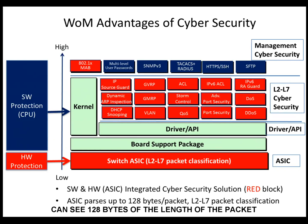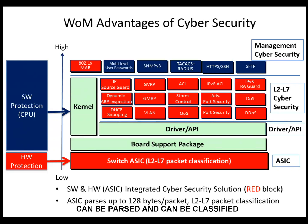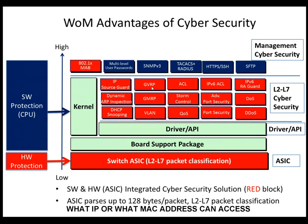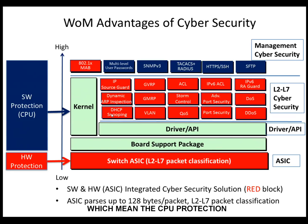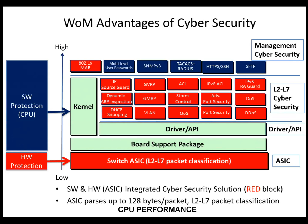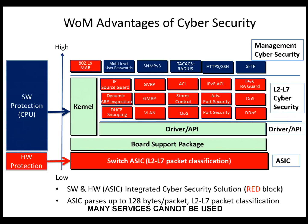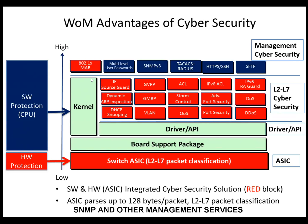Our ASIC can inspect 128 bytes of packet length, meaning packets from layer 2 to layer 7 can be parsed and classified — for example, determining what IP or MAC address can access the network, whether to drop or pass the packet. Some manufacturers only do software-based protection, meaning CPU-based protection, which has an upper limit. When an attack occurs, it consumes CPU performance. If subjected to such attacks, the CPU may be overwhelmed, causing many services — such as HTTP, Telnet, SNMP, and other management services — to become unavailable.